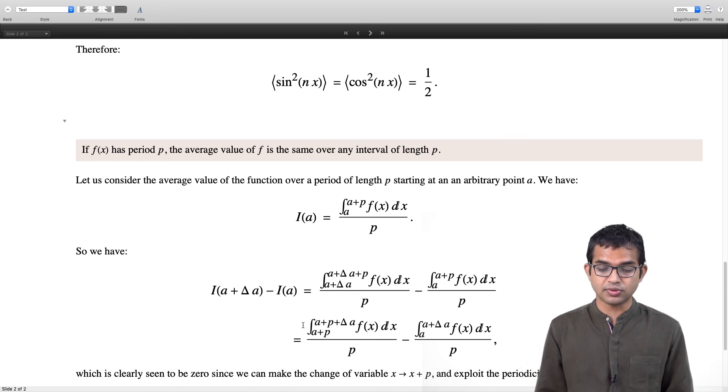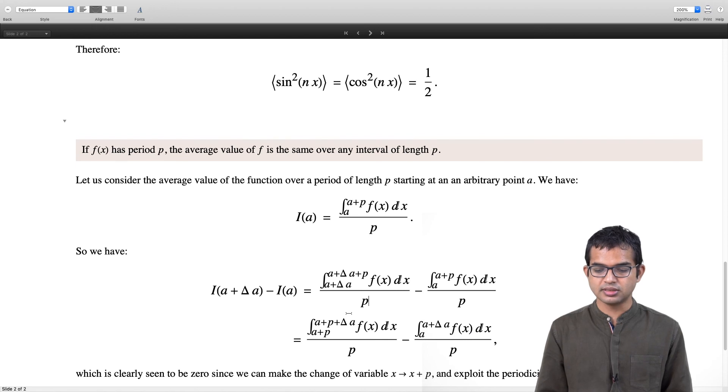From here you see, and therefore I have these two small components or big components—it does not matter, because Δa is arbitrary. But it is precisely this component and this component remains. Now we can argue that in fact these two are exactly the same. These two will cancel and you will get 0, and the reason is you can just do a change of variable: x can be made to go to x + p.